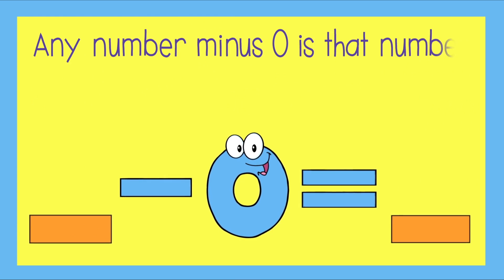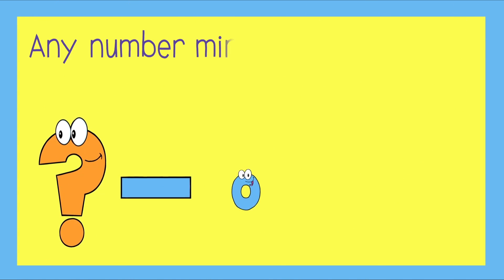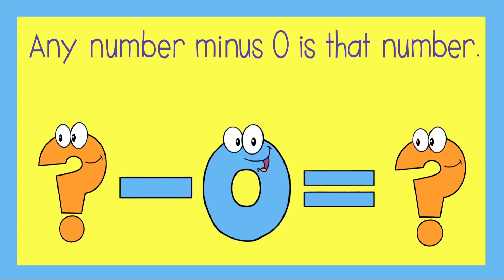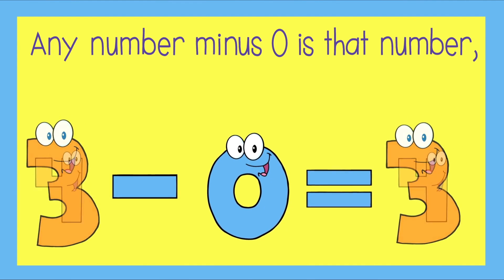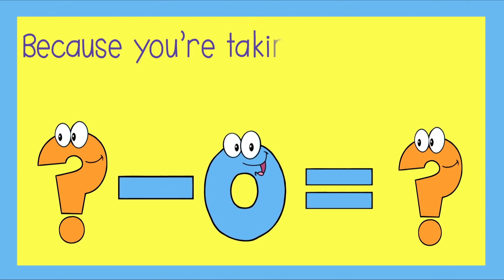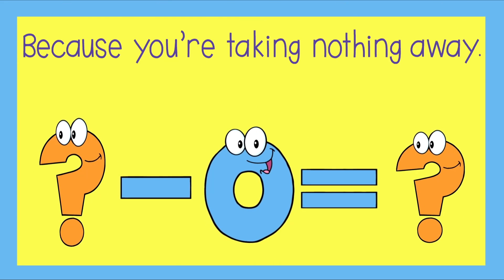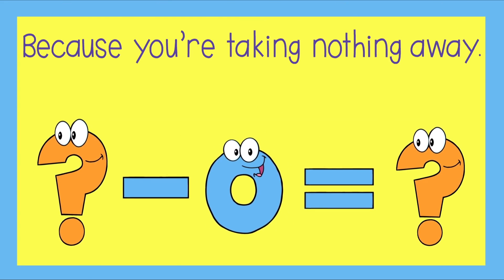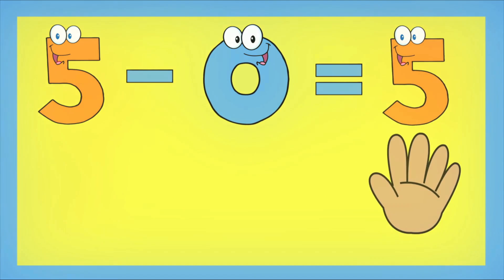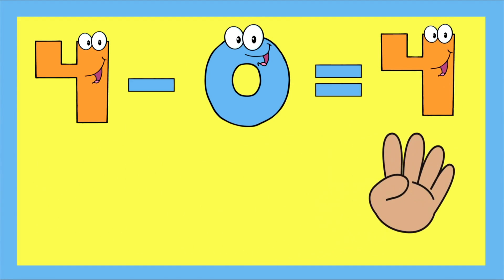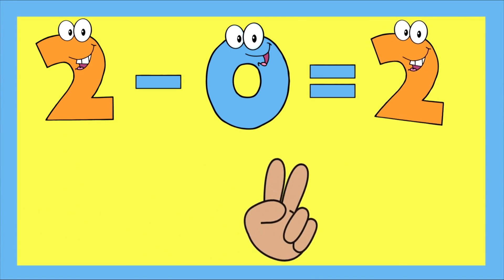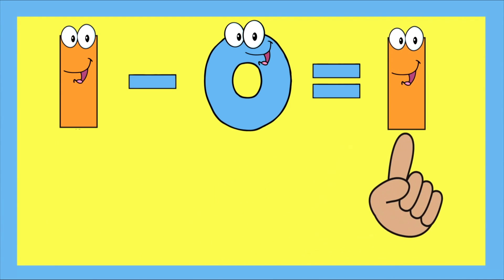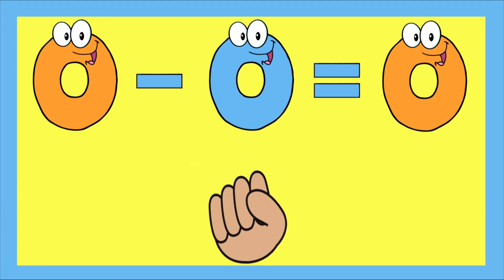Any number minus zero is that number, because you're taking nothing away. Five minus zero equals five. Four minus zero equals four. Three minus zero equals three. Two minus zero equals two. One minus zero equals one. Zero minus zero equals zero.